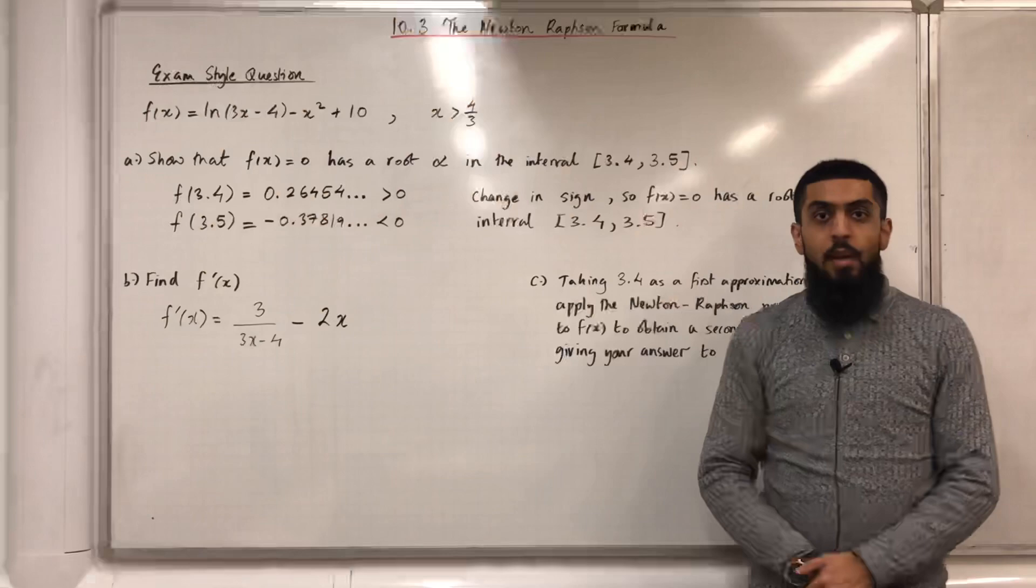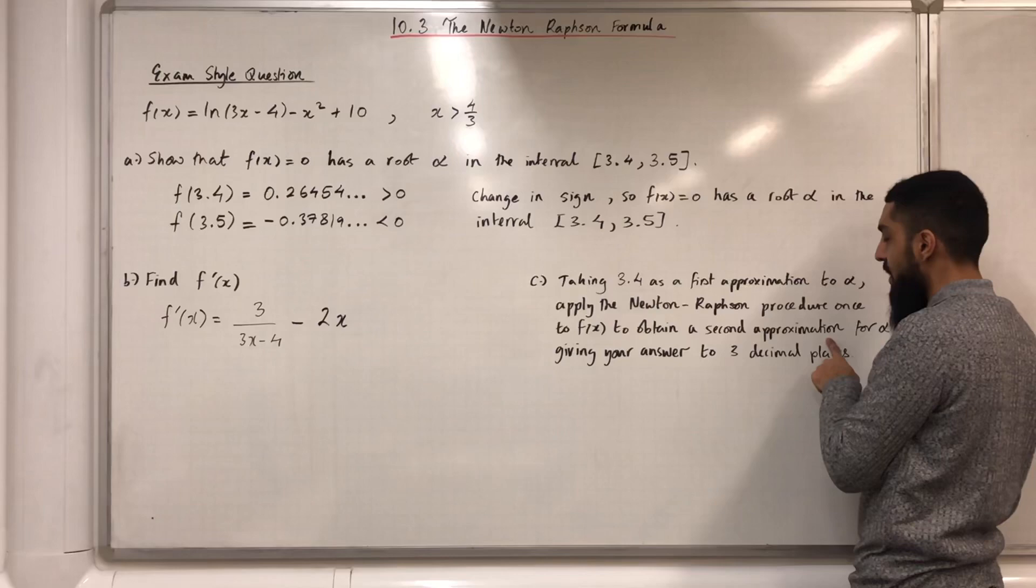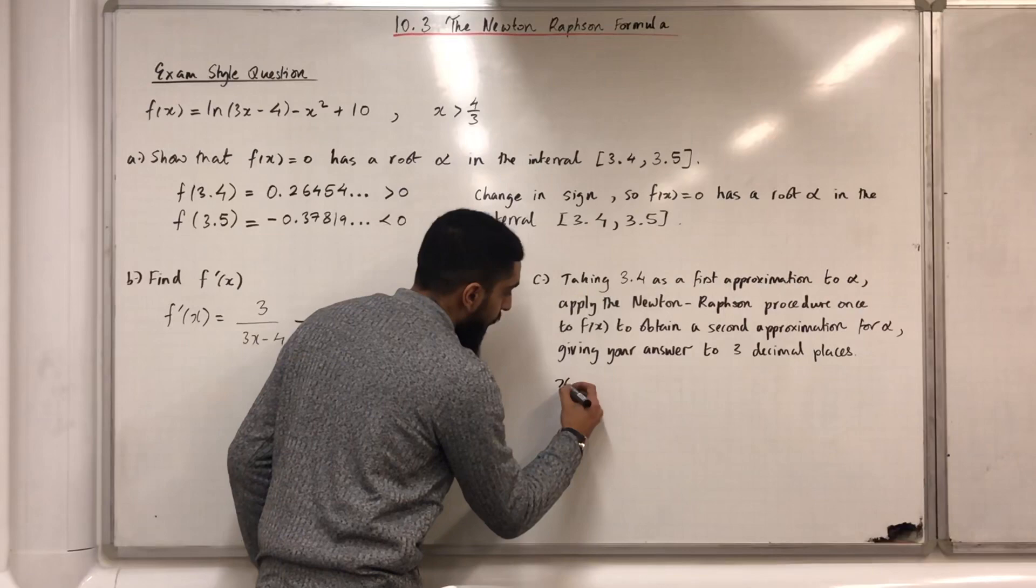Part C. Taking 3.4 as a first approximation to alpha, apply the Newton-Raphson procedure once to f(x) to obtain a second approximation for alpha, giving your answer to three decimal places. First of all, we know that the first approximation to alpha is 3.4, so we can label x0 equals 3.4.